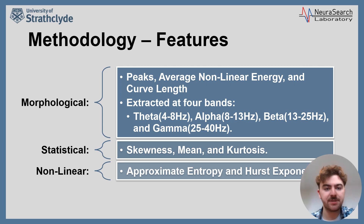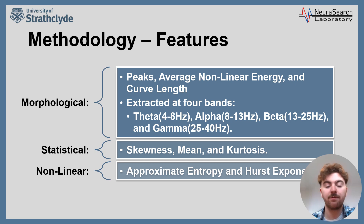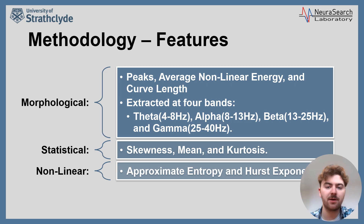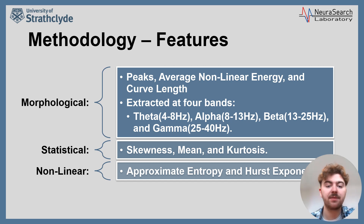To capture significant characteristics of the EEG data, we generated a set of features from the processed dataset. Firstly, morphological features — the number of peaks, the average non-linear energy, and the curve length — were all extracted. Each of these was calculated at four specific frequency bands: Theta (4–8 Hz), Alpha (8–13 Hz), Beta (13–25 Hz), and Low Gamma (25–40 Hz). We then extracted statistical features: skewness, mean, and kurtosis. Non-linear features were also extracted, these being approximate entropy and the Hurst exponent.